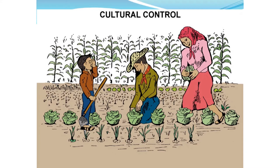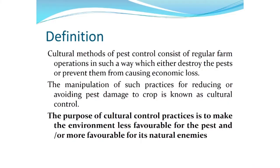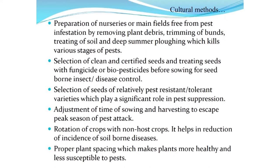Cultural control measures are conventional methods practiced by farmers from sowing to harvesting. They consist of regular farm operations that either destroy pests or prevent economic loss. These regular practices are manipulated to reduce or avoid pest damage, which is called cultural control. The purpose is to make the environment less favorable for pest proliferation and increase, while providing favorable conditions for increasing numbers of natural enemies.